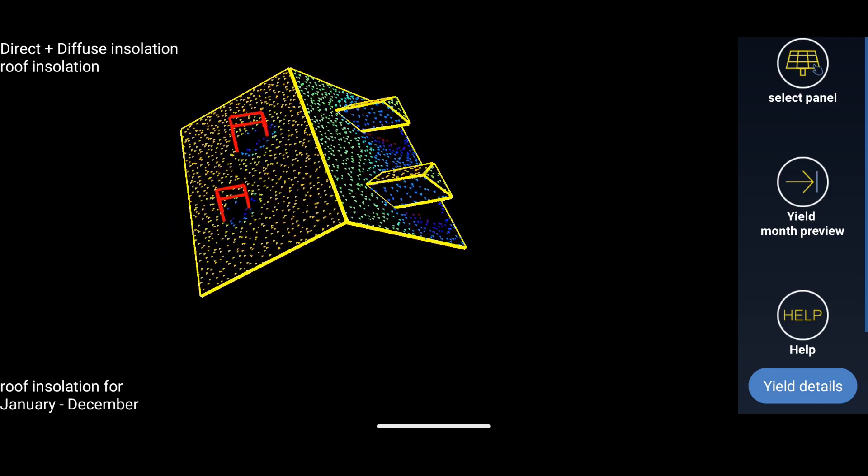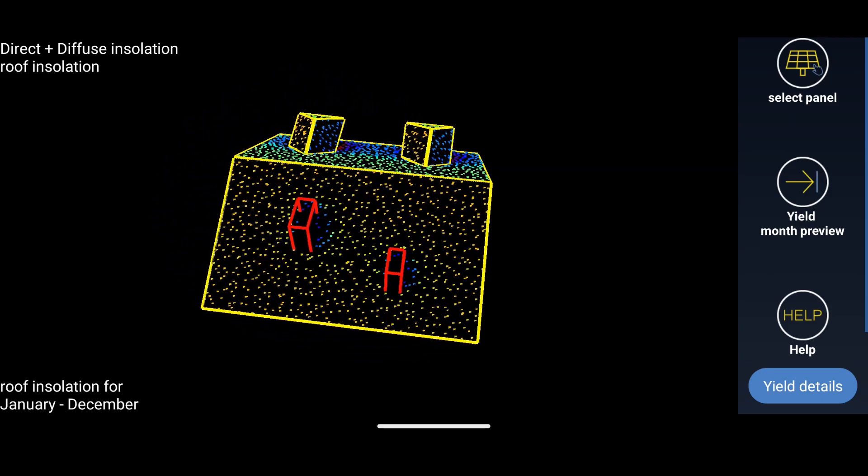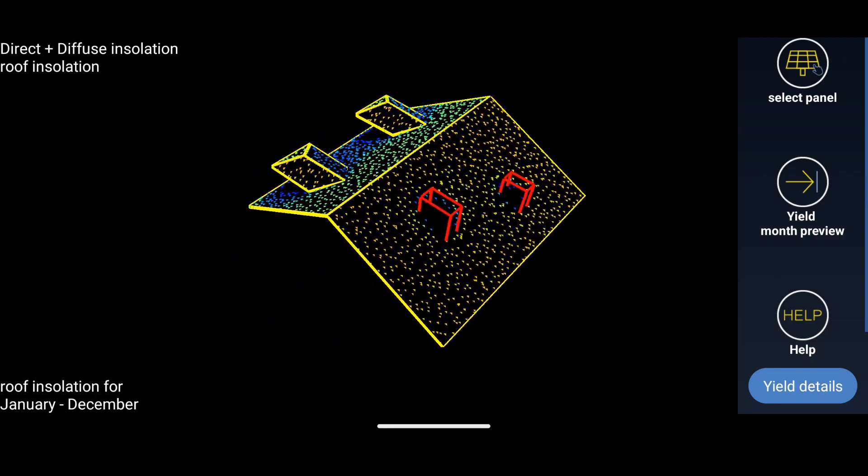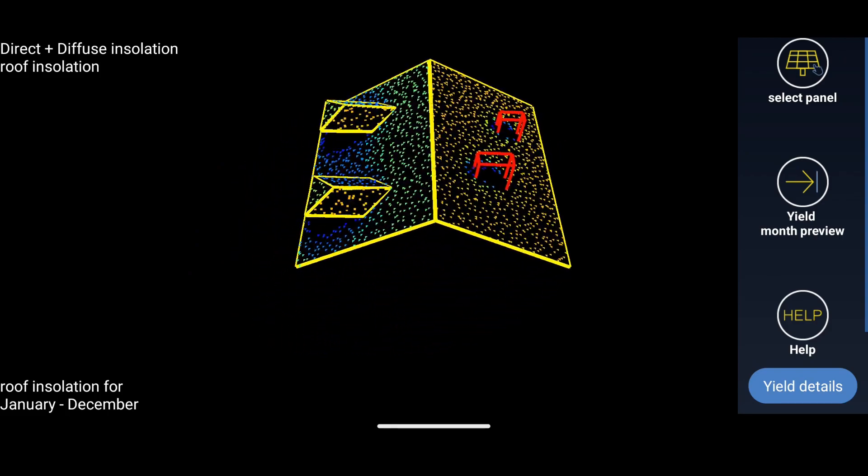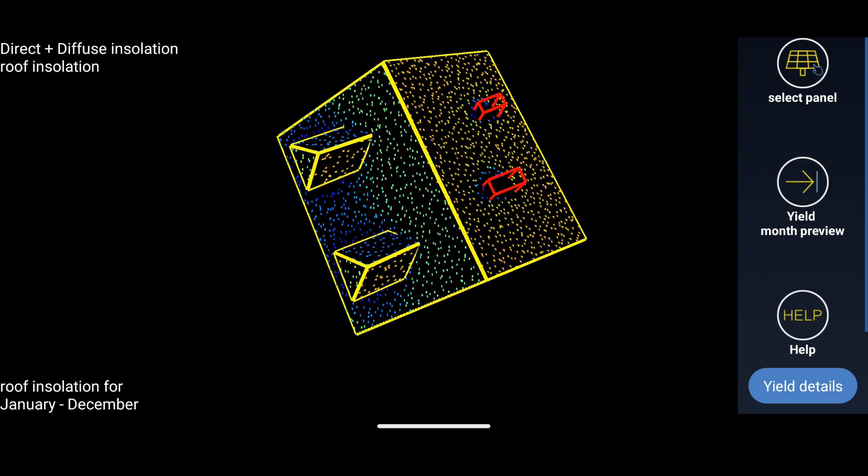It initially presents the solar potential map of your roof where orange color means a lot of solar energy while blue means little solar energy. So you know the places where the most solar radiation falls on your roof.